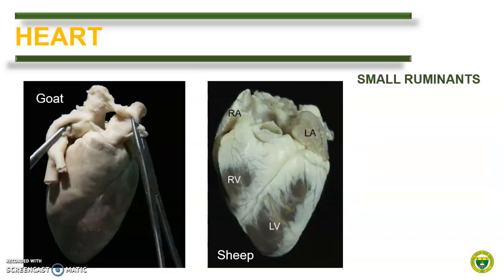For small ruminants like goat and sheep, the heart is like in the dog but with a more pointed apex. Here is a heart of a goat and a heart of a sheep. The heart can be located between the third and sixth rib.